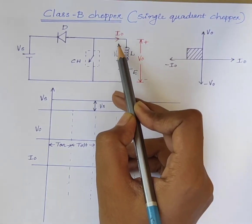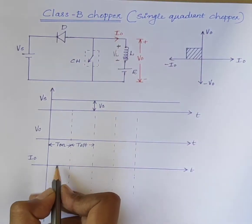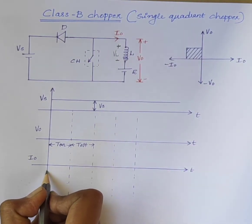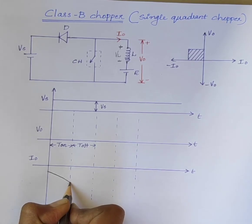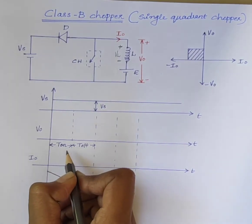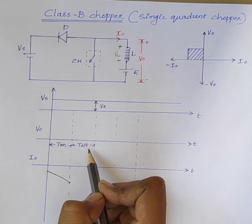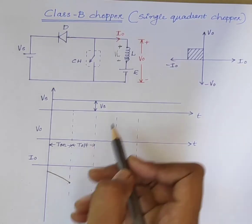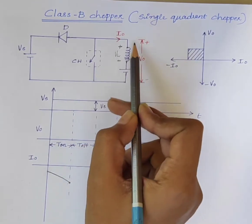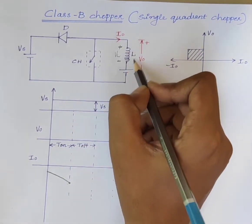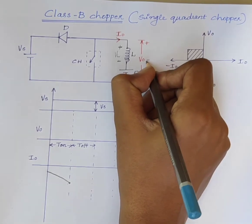Therefore, the load current I0 increases in the negative direction during the on time. Consider, the output voltage V0 is equal to VL plus E.